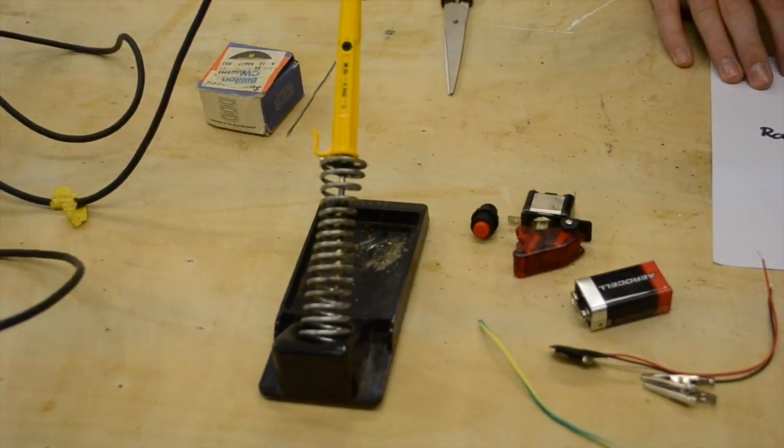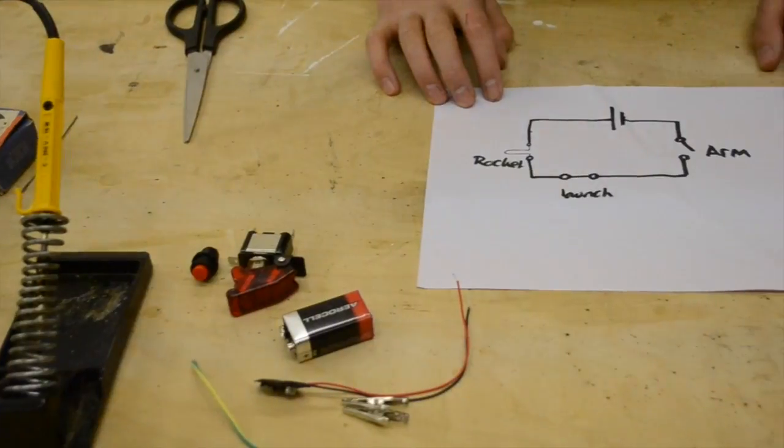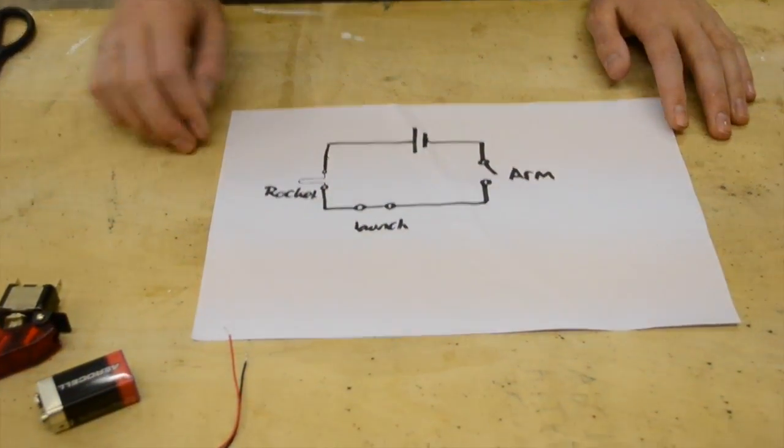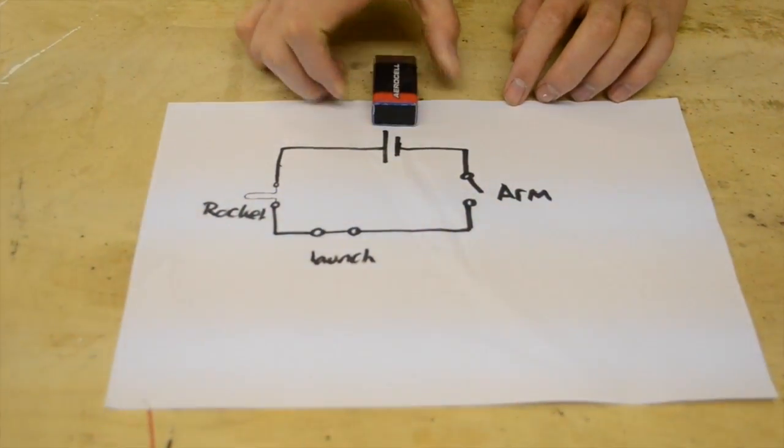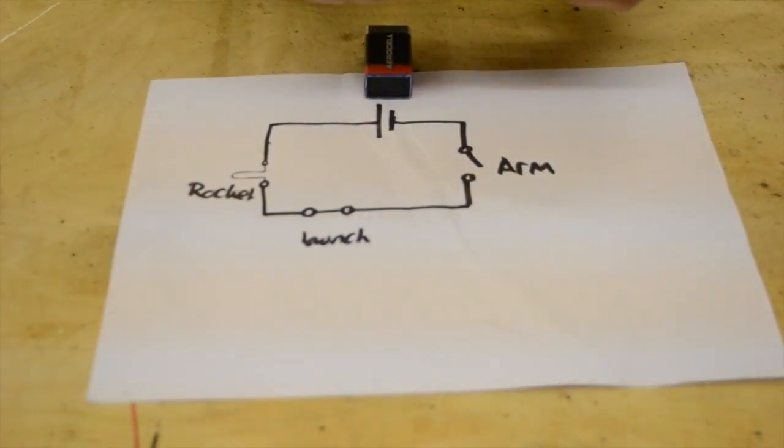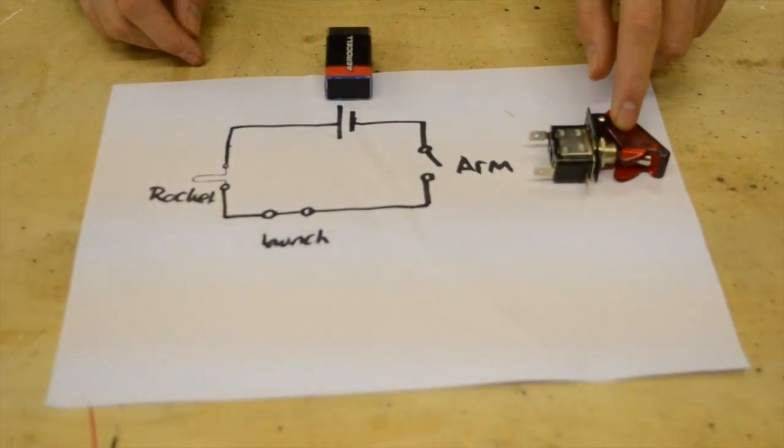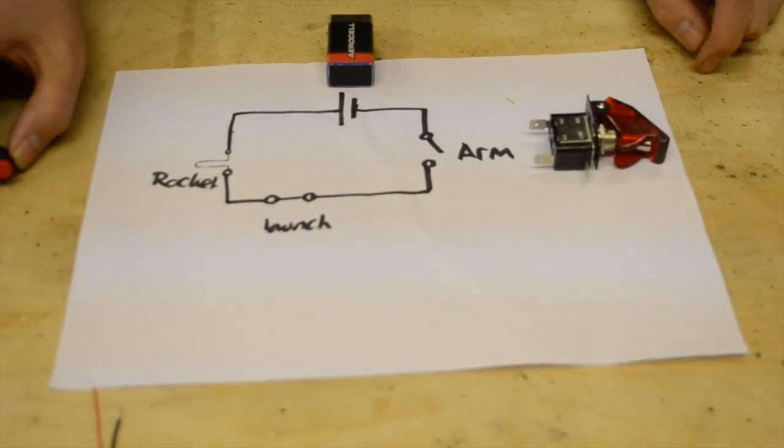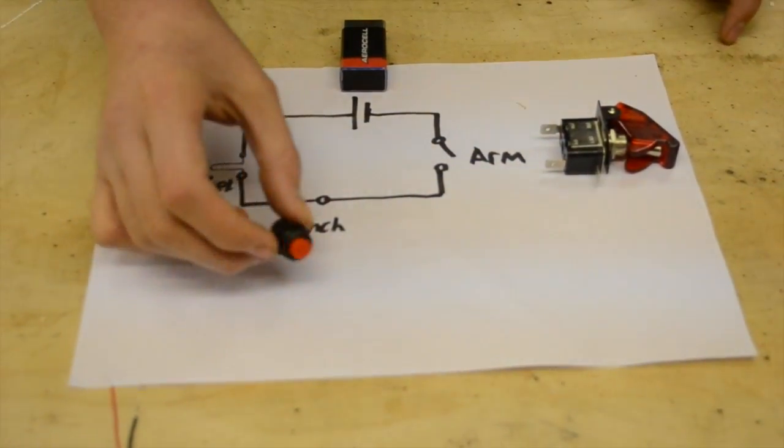So while the soldering iron is heating up, I've just drawn this simple circuit diagram to basically explain what we're going to be doing. So basically the nine-volt battery goes here, and then that goes around the arm switch, which we're going to use this toggle switch here because it looks cool.